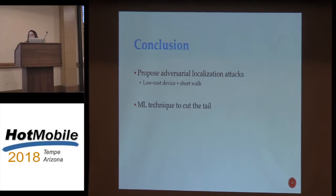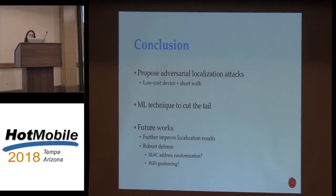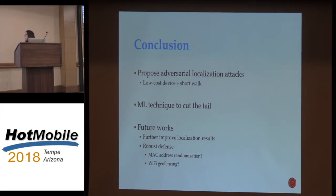In conclusion, we propose a new attack called adversarial localization. This attack achieves remote localization using only a low-cost device in passive mode. Current localization techniques have large variance, and we use machine learning techniques to cut the tail and make the attack much more powerful. For future work, we will focus on improving localization on the good instances, and also investigate countermeasures such as micro-localization or Wi-Fi-based geofencing to find which might be applied in a realistic defense setting.